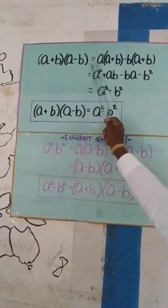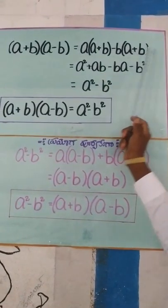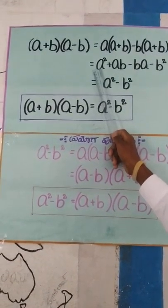A plus B into A minus B equals A into A plus B minus B into A minus B. A into A equals A square.